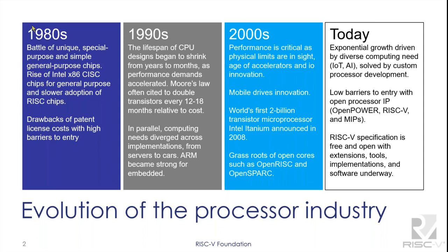In the 1990s, designers really began to seriously exploit Moore's Law. The rule of thumb was that for any given area of silicon, you would double the number of transistors every 12 to 18 months relative to cost — so more power for processors, less cost. Another interesting development in the 1990s was the emergence of ARM, which became very strong in the embedded space.